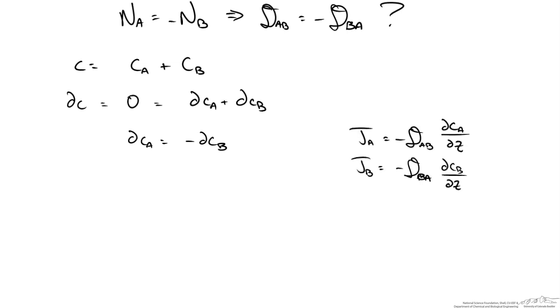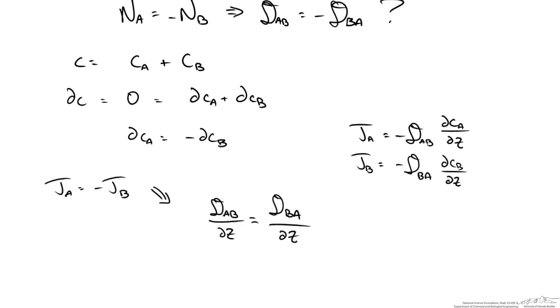And we know what our flux equations look like. In this case we know that JA is equal to negative JB. So therefore that means we have the following relationship.